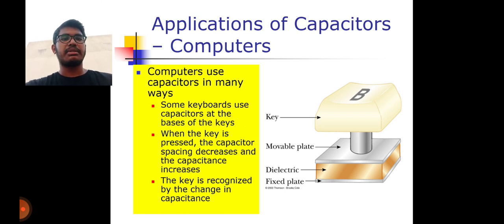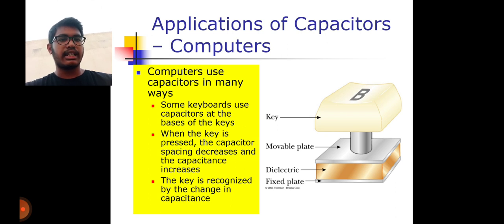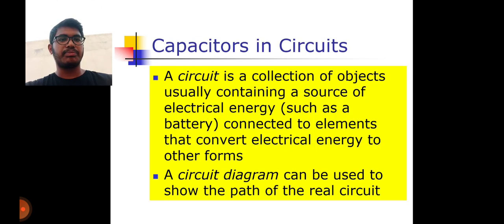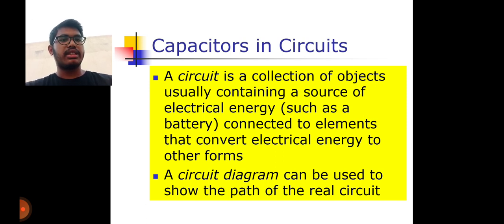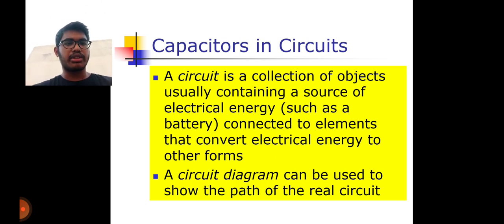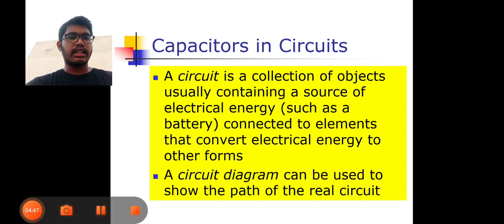How capacitors work in computers: when a key is pressed, the capacitor spacing decreases and capacitance increases. The key is recognized by the change in capacitance. A circuit is a collection of elements usually containing a source of electrical energy connected to elements that convert electrical energy into other forms. A circuit diagram can represent a real circuit.